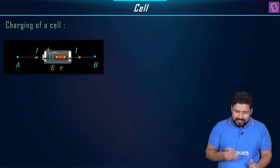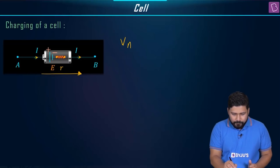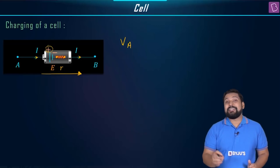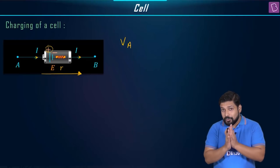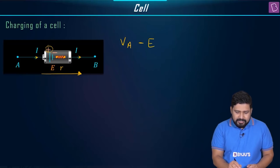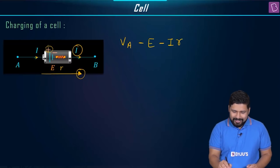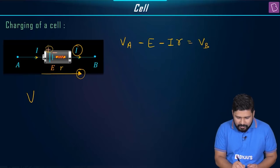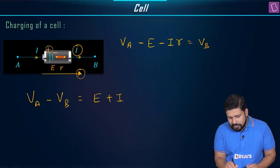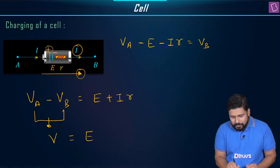Let's get an expression for the terminal potential during charging. Moving from A towards B, I write V_A. As I encounter the positive terminal, it should be minus E. The direction of current and direction of motion are the same, so it should be minus I×r. This gives: V_A − E − I×r = V_B, so V_A − V_B = E + Ir.